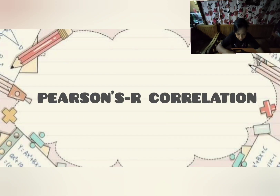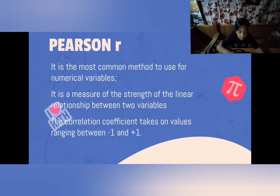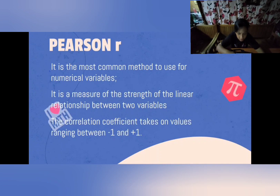Next, Pearson R correlation. What is Pearson R? It is the most common method used for numerical variables — it falls under quantitative research, specifically correlational analysis. If your research design is correlational analysis, one of the tools you can use is Pearson R. Correlation is a measure of the strength of the linear relationship between two variables. This tool helps you determine whether there is a significant relationship between two variables — whether one variable affects the other.